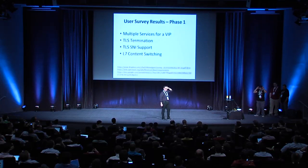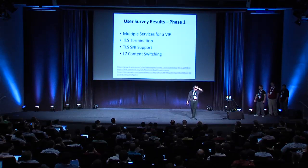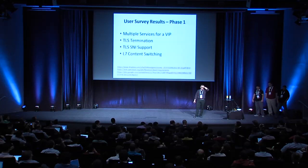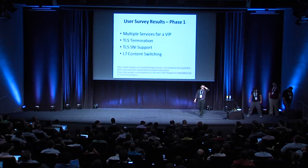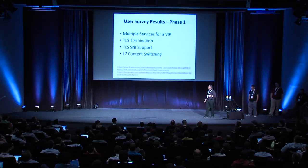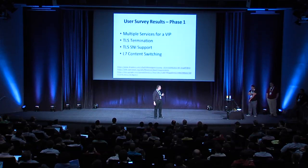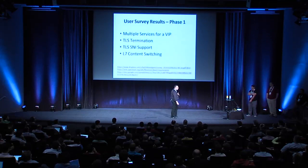TLS termination is basically taking your HTTPS connection and terminating it on the actual load balancer and then either passing it through as plain HTTP or re-encrypting as HTTPS. This is important not just because you want to terminate it on the load balancer for simpler management, but because many of the more advanced capabilities of a load balancer are only available if the load balancer can actually inspect the content.